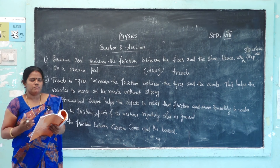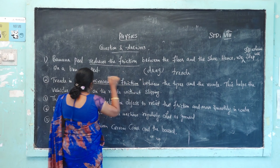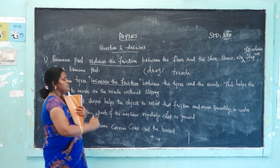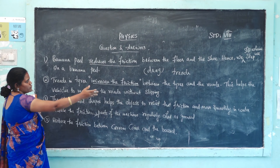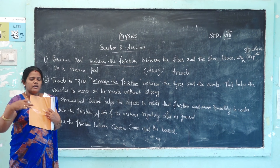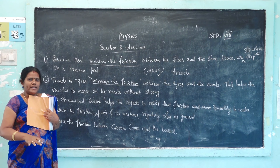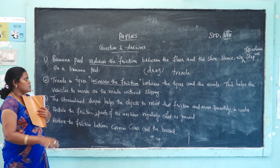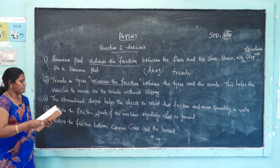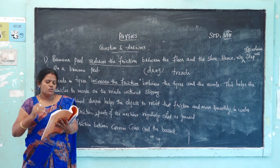Second reasoning question: why do tires of vehicles have treads on them? Treads in tires increase the friction between the tires and the road. This helps vehicles to move on the roads without slipping. Without treads, the wheel could easily slip, especially if there is oil or a banana peel on the road.